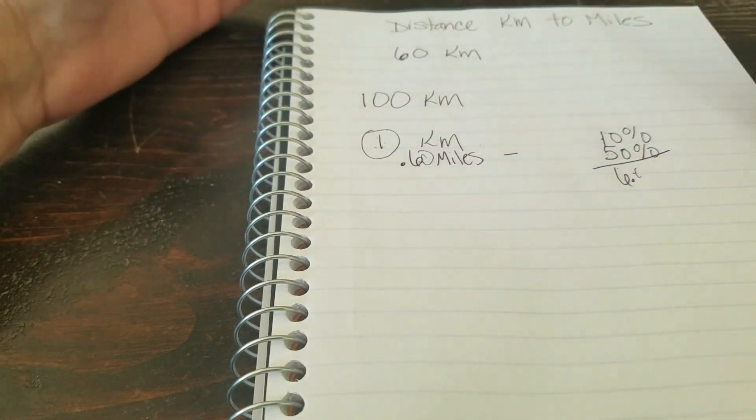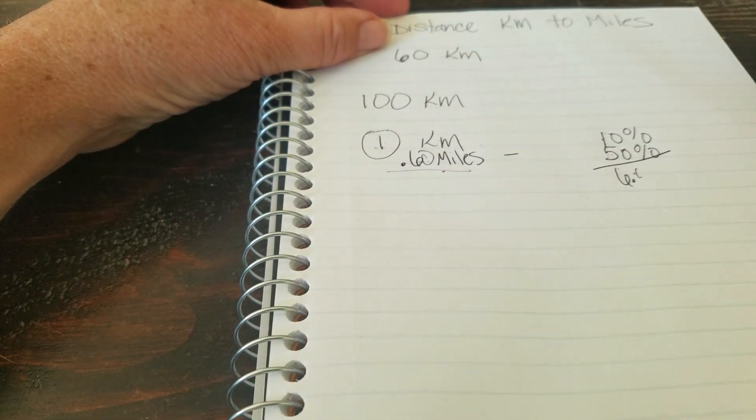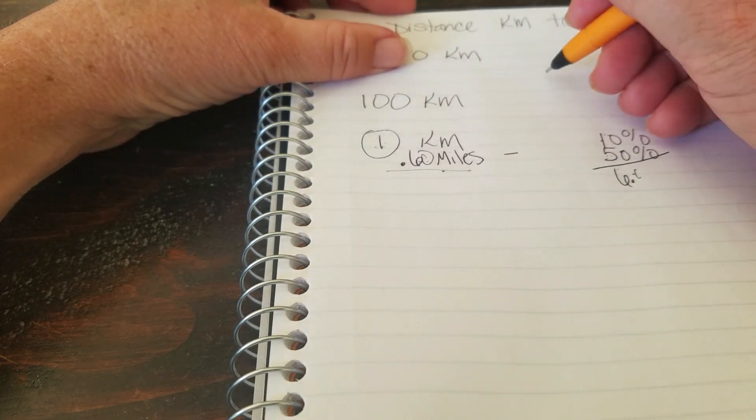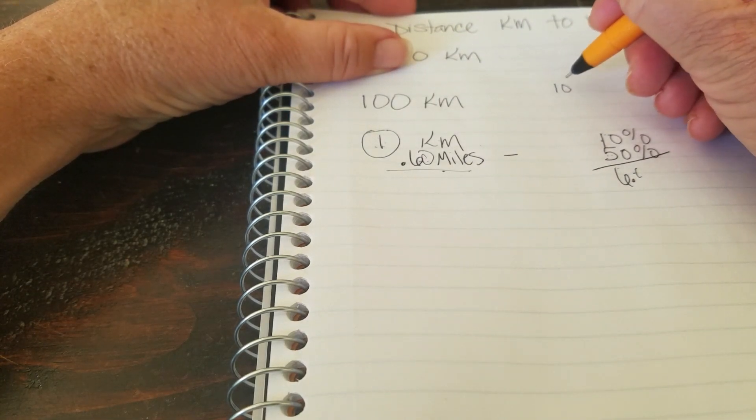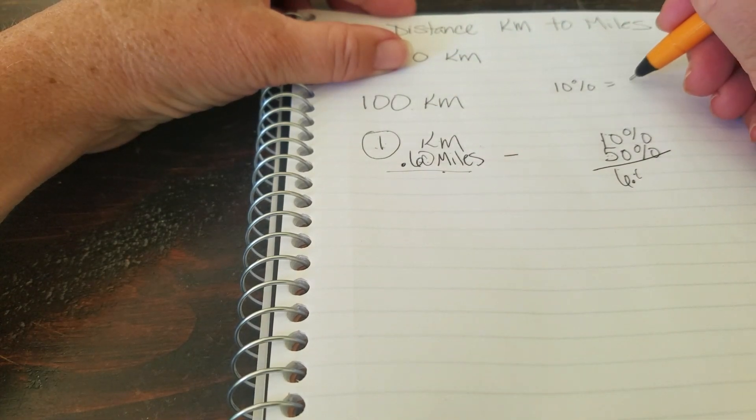How can you do this in your head? The first thing we're going to do is figure out what is 10% of 100. 10% of 100 is 10.